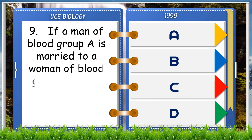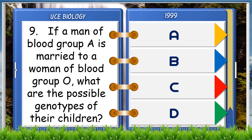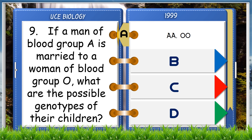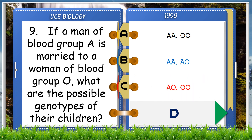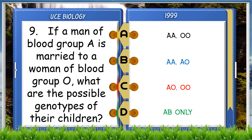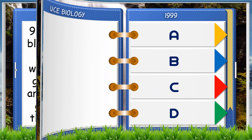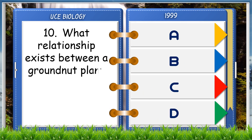If a man of blood group A is married to a woman of blood group O, what are the possible genotypes of their children? A. AA, AO, and OO, B. AA and OO, C. AO and OO, D. AB only. The answer is C, AO and OO.